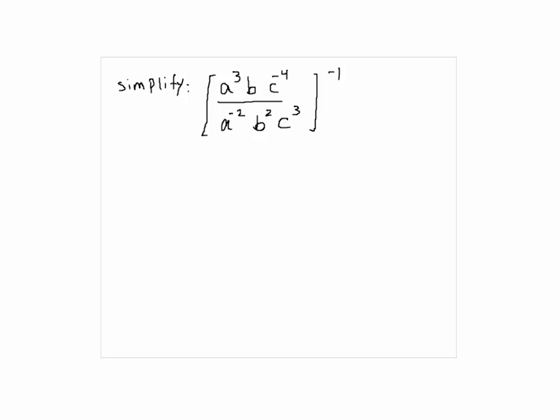To simplify this, we need to know the properties. If I have A to the power of n over A to the power of m, that would be A to the power of what? Who knows the answer here? What do we do with the exponents? You can even do it with the microphone if you want to tell me. Subtract.